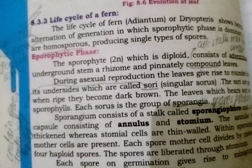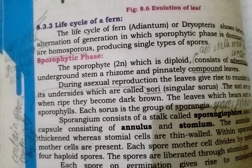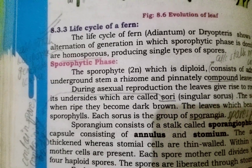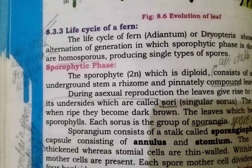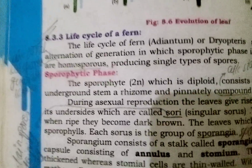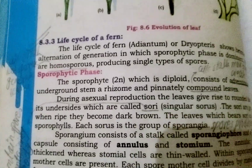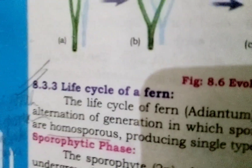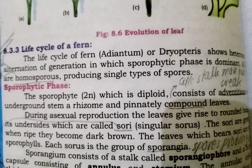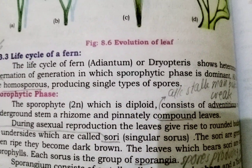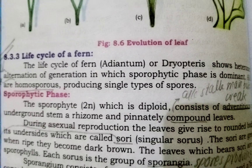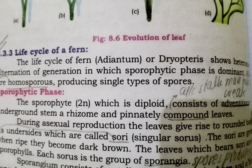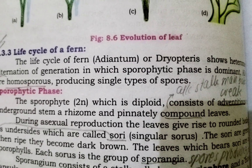As we have discussed earlier about ferns, which is one of the subdivisions of the vascular seedless plants. Today we will study about the life cycle — the sporophyte phase and gametophyte phase. The life cycle of fern Adiantum or Dryopteris shows heteromorphic alternation of generation in which the sporophytic phase is dominant.